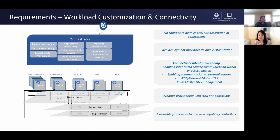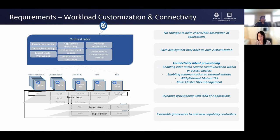The next stage is workload customization, which needs to be done based on the type of cluster that a microservice is deployed on. For example, the image repository to be used, replicas, or storage class may need to be configured based on the cluster where the microservice is being deployed. Enabling inter-microservice communication within or across clusters is another important function, and enabling this may require mutual TLS and also the management of multi-cluster DNS. Once all these configurations are done, the lifecycle management of the application is also required — where an application can be started, terminated, updated, or rolled back.